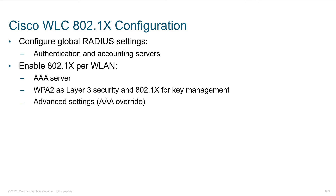We're going to start off with global RADIUS settings. What is that? We're talking about what traffic should be authenticated, how, and where we're doing accounting or logging of what's occurred. We want to know who attached to our network, so we would attach those RADIUS servers for both authentication and accounting functions.